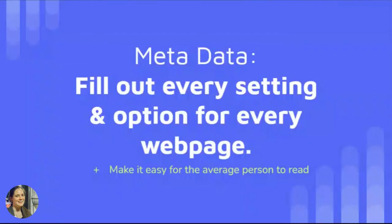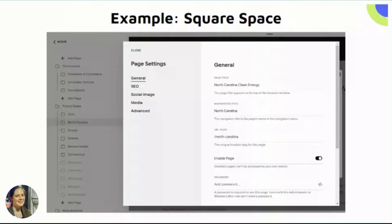Next, metadata. The short of it is to just fill out every setting and option you can find for every web page, and try to make it easy for the average person to read — similar to how you want members to fill out all the boxes when editing their business directory listing. If you have Squarespace, this is what yours likely looks like after clicking on page settings — you'll see options for General, SEO, Social Image, Media, and Advanced. I would click through every one and fill out anything you possibly can. For the URL slug, I would not change it for old pages, only for new ones, because you'd then need to set up a redirect.